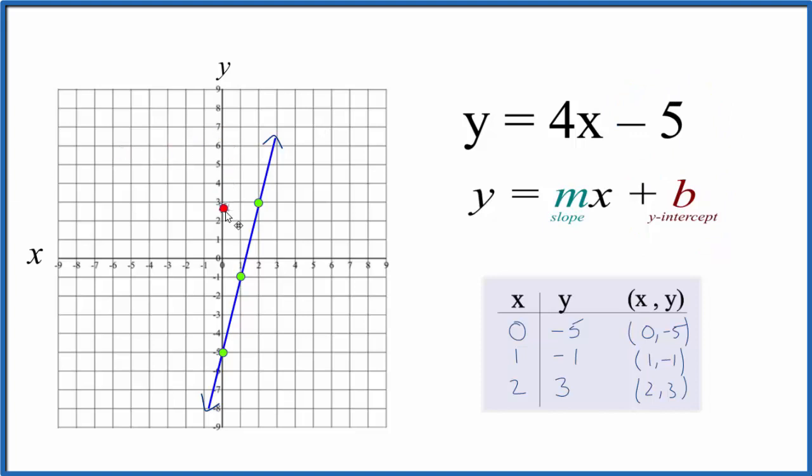helpful to think about this as 4 over 1, because now we can say rise over run. We'll go to that y-intercept, go up 4 (rise: 1, 2, 3, 4) and over 1. From there we can